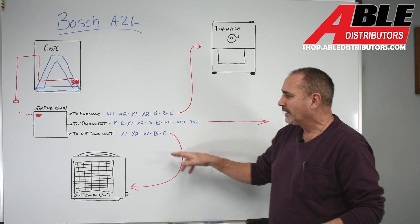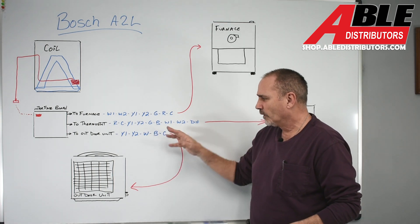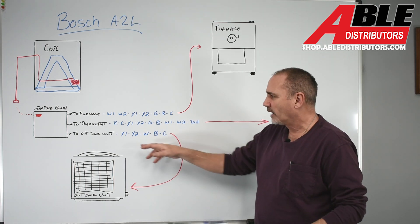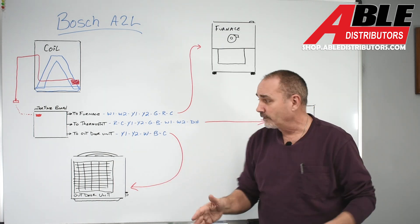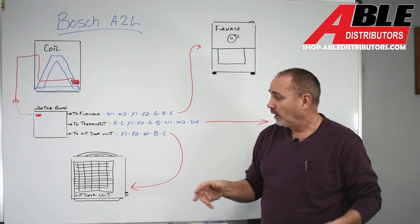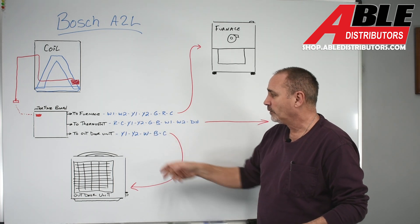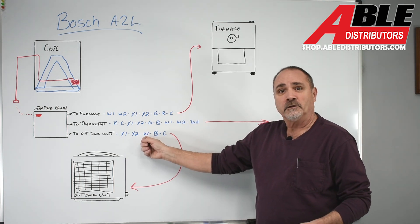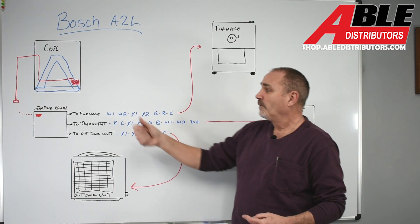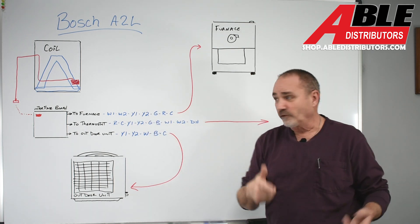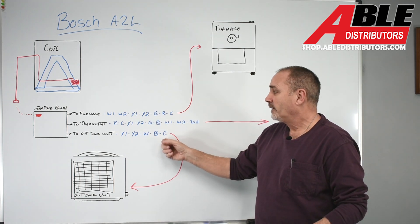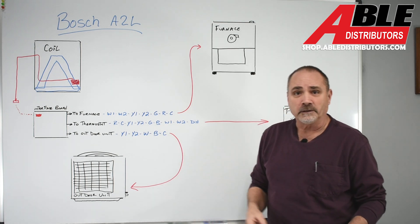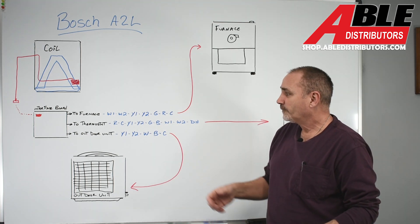And then going to the outdoor unit, again, they don't know what you're doing here. It's a generic box. So you got Y1 and Y2, again with the Bosch, not going to matter. It's only a Y call. So whatever you hook up here, just make sure you carry it through. The W, you'll need that because that'll send power back to the furnace for defrost. The B, reversing valve, and the common for your Y, I mean, and your reversing valve. So that's it.